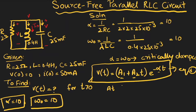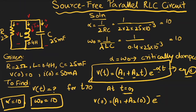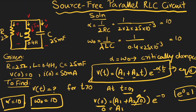At time t equals 0, substituting into equation 1: v(0) equals A₁ plus A₂ times 0 times e^(−α·0). Since e⁰ equals 1 and the A₂ term goes to zero, we get v(0) equals A₁. We know v(0) equals 0, so A₁ equals 0.